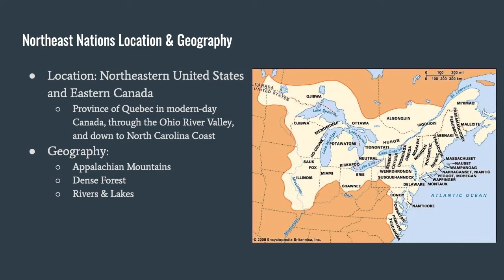We are going to start in the Northeast part of the United States and take a look at some similarities between the Northeast nations. These Northeast nations are in what we now think of as the Northeast part of the United States and New England, and they extend into Eastern Canada.